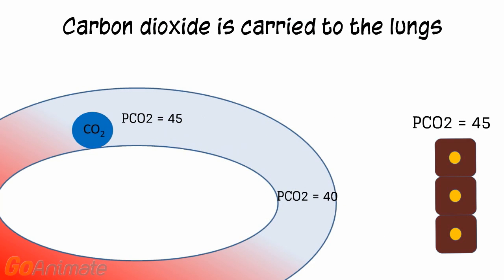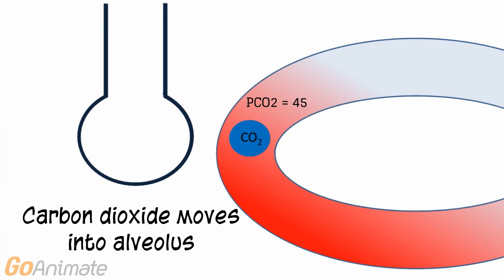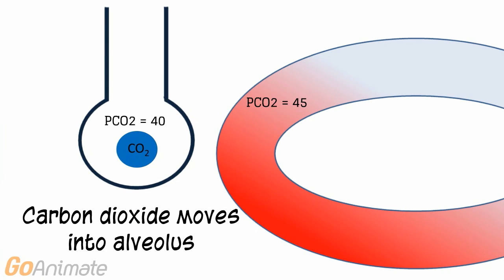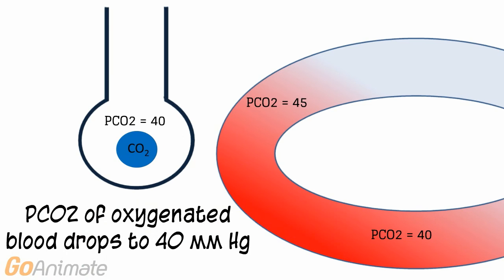Carbon dioxide is carried to the lungs. When carbon dioxide reaches the lungs, it meets an alveolar PCO2 of 40 mmHg. Carbon dioxide follows its partial pressure gradient and diffuses into the alveoli, causing the blood PCO2 to drop back to 40 mmHg.